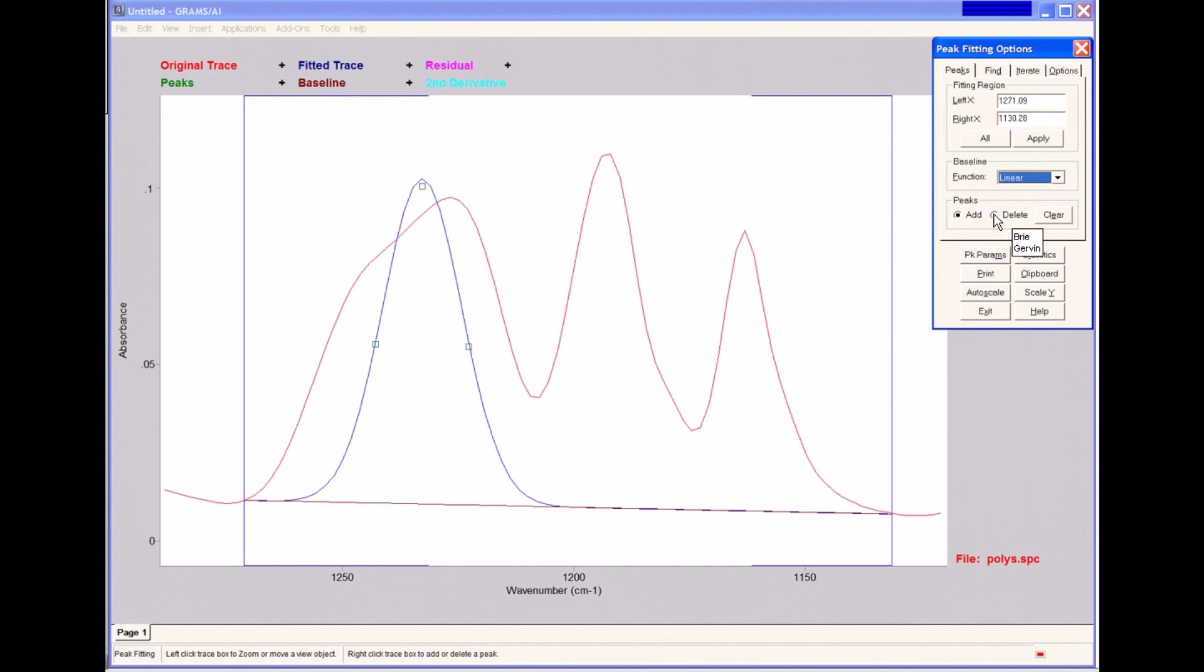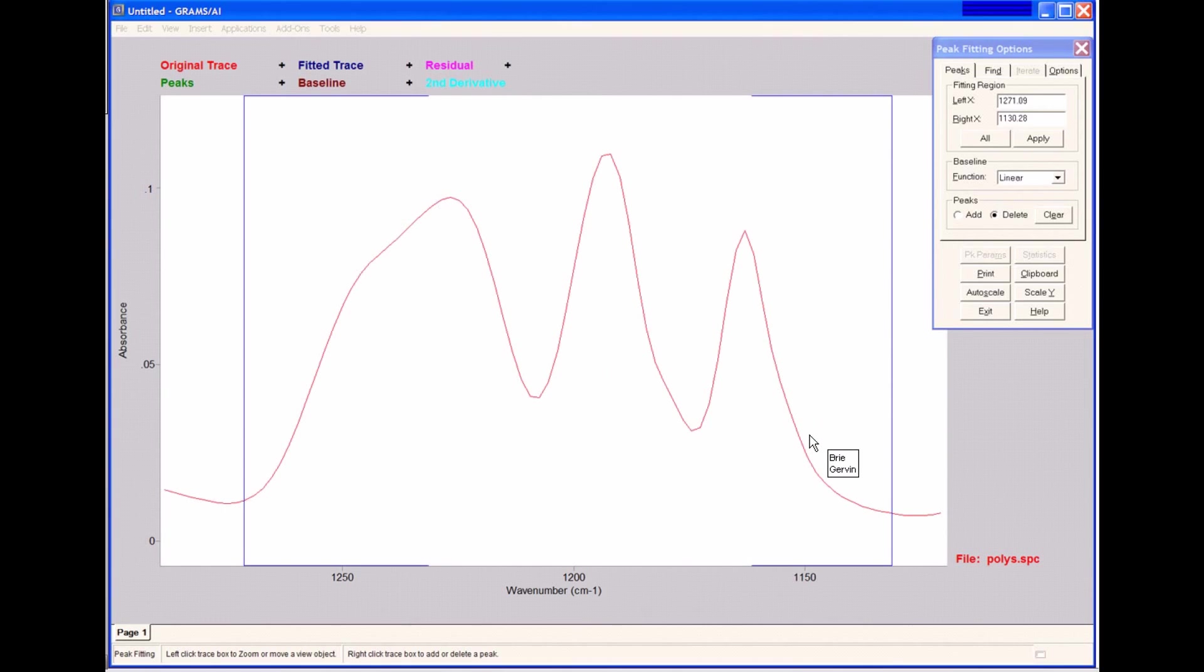To delete a peak, I can click here in the peak section, then delete. If I right click on the peak, it confirms, and I can then delete the peak.